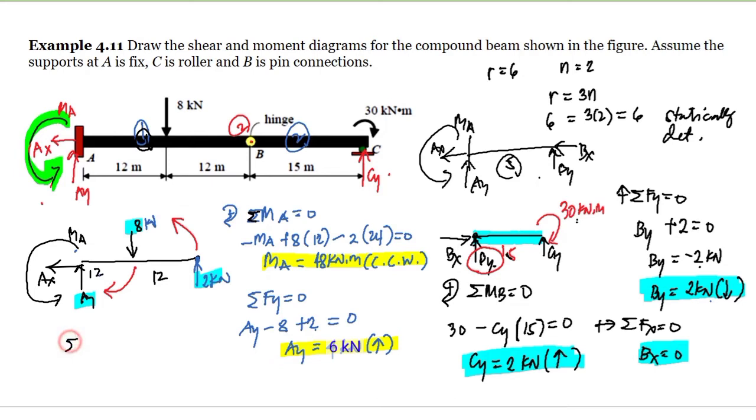For summation of forces horizontal equal to zero, taking right as positive, we assumed AX to the left which is negative. But since it's the only horizontal force, AX equals zero. Now it's time to draw our shear and moment diagrams since we have all the reactions.